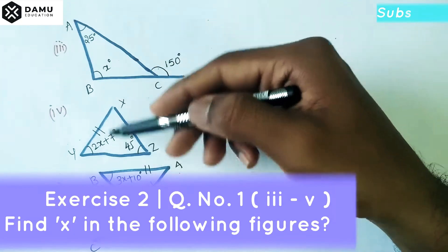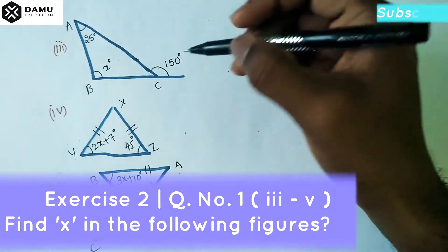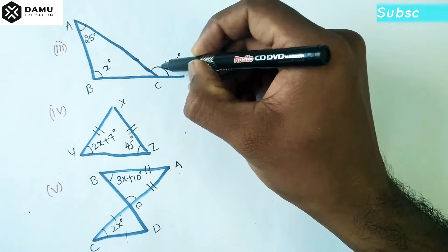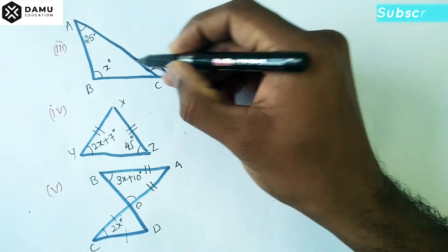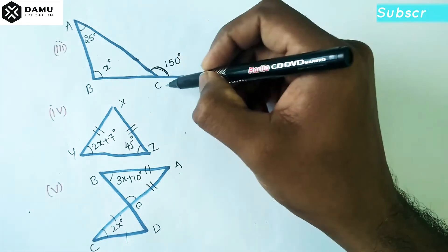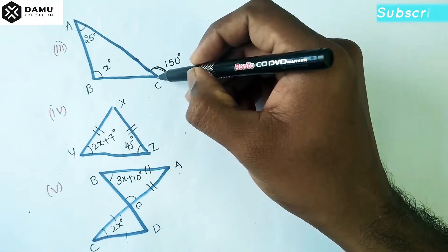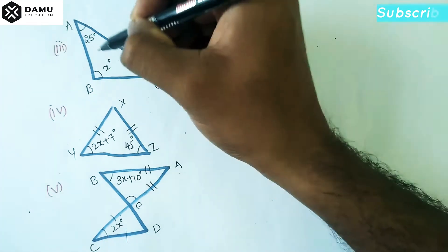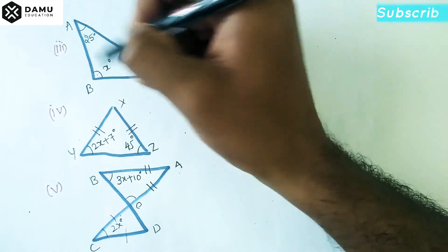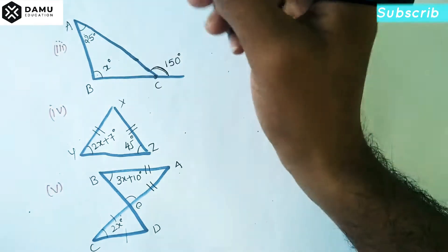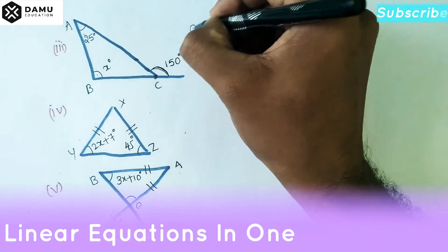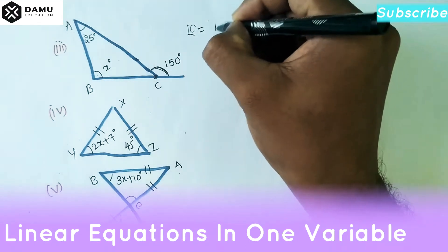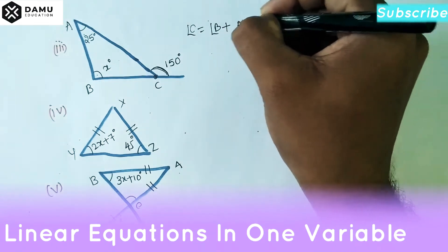In the first question we have to find the X values. Here, this is the exterior angle for triangle ABC. The exterior angle will be equal to the sum of the two opposite interior angles. So angle C will be equal to angle B plus angle A.